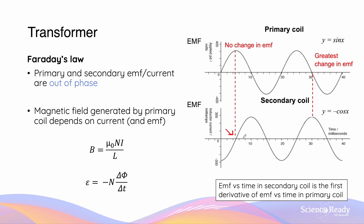Using Faraday's law, we can also deduce that when the change in EMF and current in the primary coil is the greatest — in other words, when the EMF and current are changing most quickly on the graph — this will lead to the greatest change in magnetic flux, and thus the magnitude of the induced EMF in the secondary coil will also be the greatest. On the first graph, when the gradient is the steepest, this corresponds to the greatest rate of flux change felt by the secondary coil, and by Faraday's law, this corresponds to an induced EMF with the greatest magnitude. We often describe this relationship of EMF or current between the primary and secondary coils as out of phase.